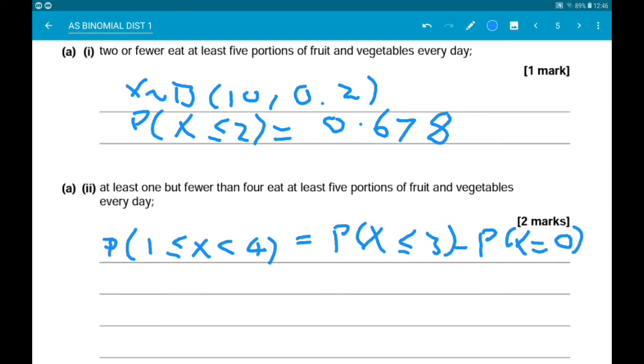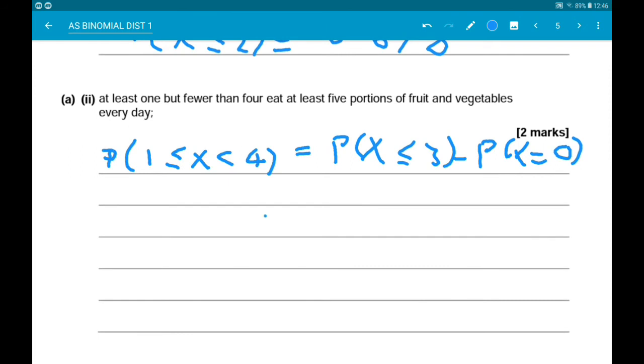So the probability x is less than or equal to 3 is 0.880, and the probability x equals 0 is 0.107. And that gives us a final answer 0.772.